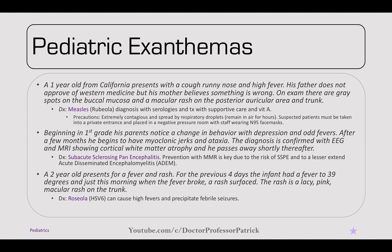Beginning in first grade, a child's parents noticed depression, odd fevers, then myoclonic jerks and ataxia. EEG and MRI show cortical white matter atrophy, and he passes away shortly thereafter. This child who had measles infections very young was at risk of subacute sclerosing panencephalitis, or SSPE. SSPE is 100% fatal. The risk is 1 in 600 people who get measles between ages 2 and 5, and 1 in 60 for those age 1 or younger — a 100-fold increase for young children. MMR vaccine prevents this. There's also risk of ADEM from measles infection.